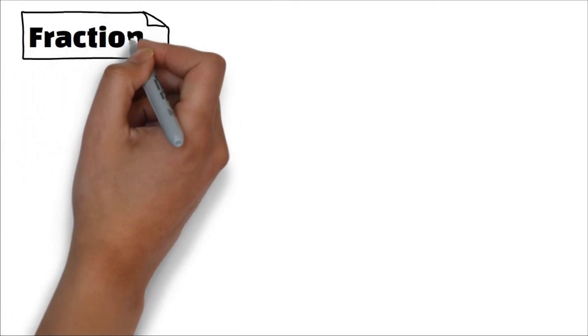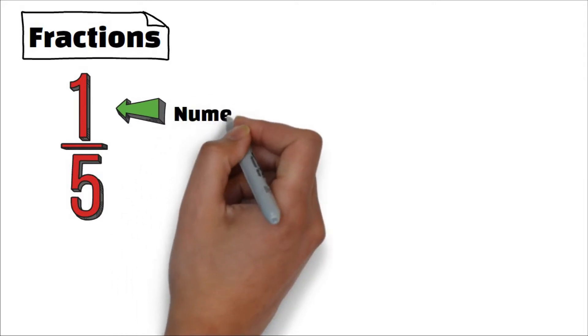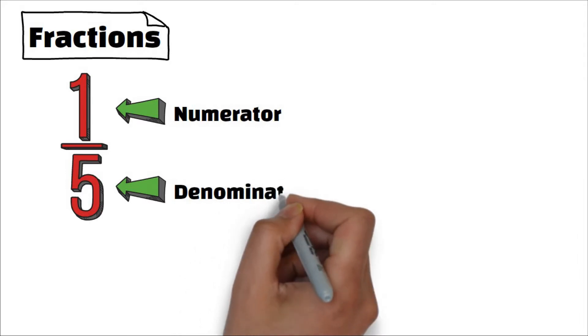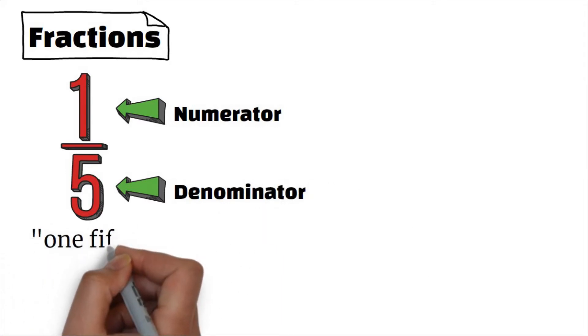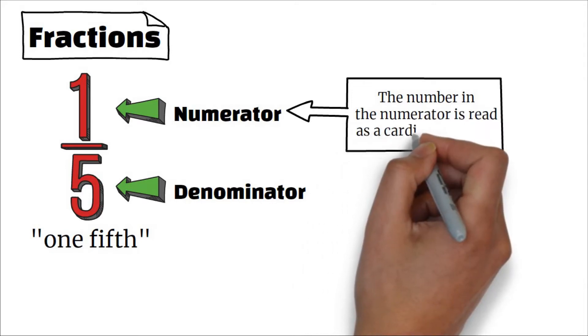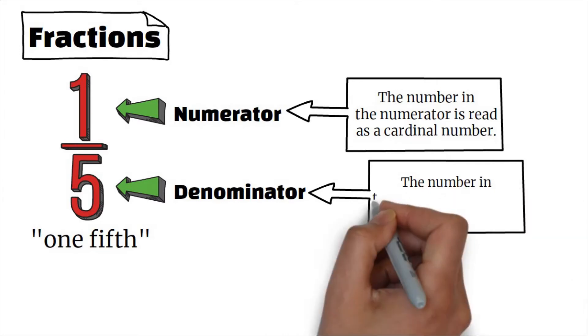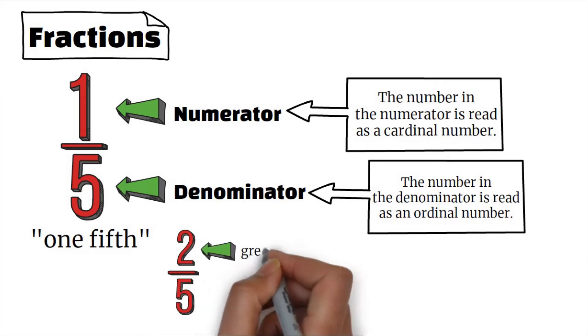Fractions: the number at the top is the numerator and the number at the bottom is the denominator. We read this fraction as one-fifth. As you can see, the number in the numerator is read as a cardinal number and the number in the denominator is read as an ordinal number.